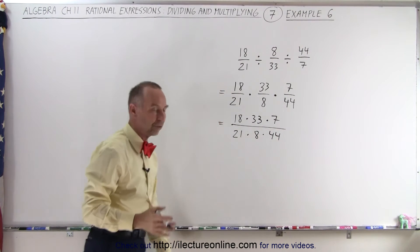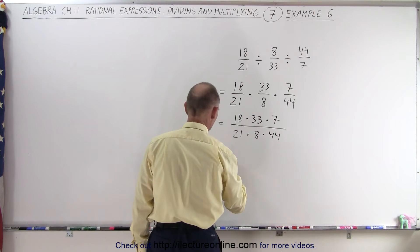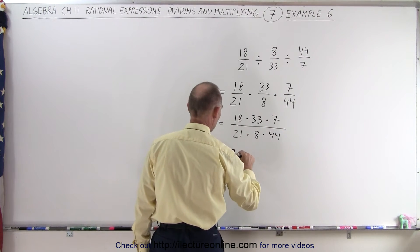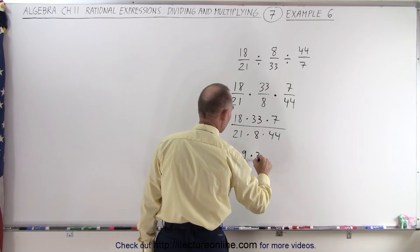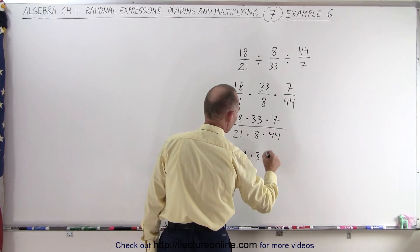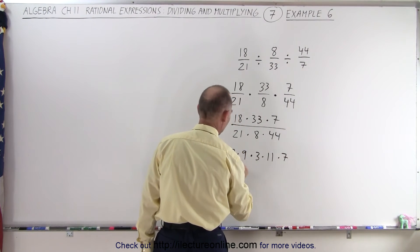And now let's factor some of these terms as much as possible to make it easier. So 18 can be written as 2 times 9, 33 would be 3 times 11, and 7, we cannot make that any simpler than that,